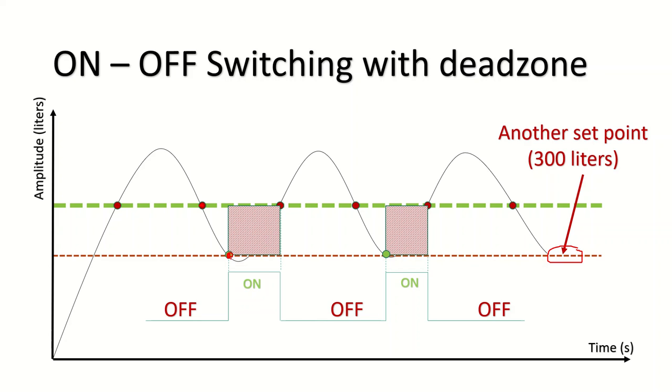When the level is at 300 liters or less, the pump will be activated, and it will be on until the level reaches the set point. Then the pump is off, and so on, on and off.